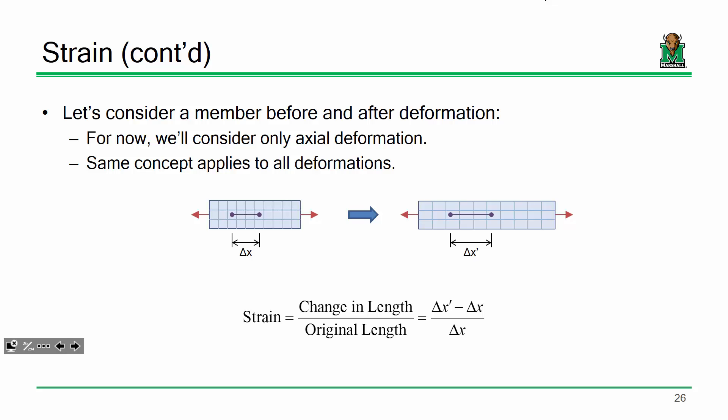Strain is defined as the change in length divided by the original length — sort of a percent elongation. For example, if I had a rubber band 10 inches long and I stretched it one inch so it's now 11 inches, the strain would be 10% or 0.1 — change in length divided by original length. If I look at some segment delta x, here's delta x prime: (delta x prime minus delta x) over delta x — that's the definition of strain. In calculus terms, we're talking about a rate of change, so we can look at that as a derivative.